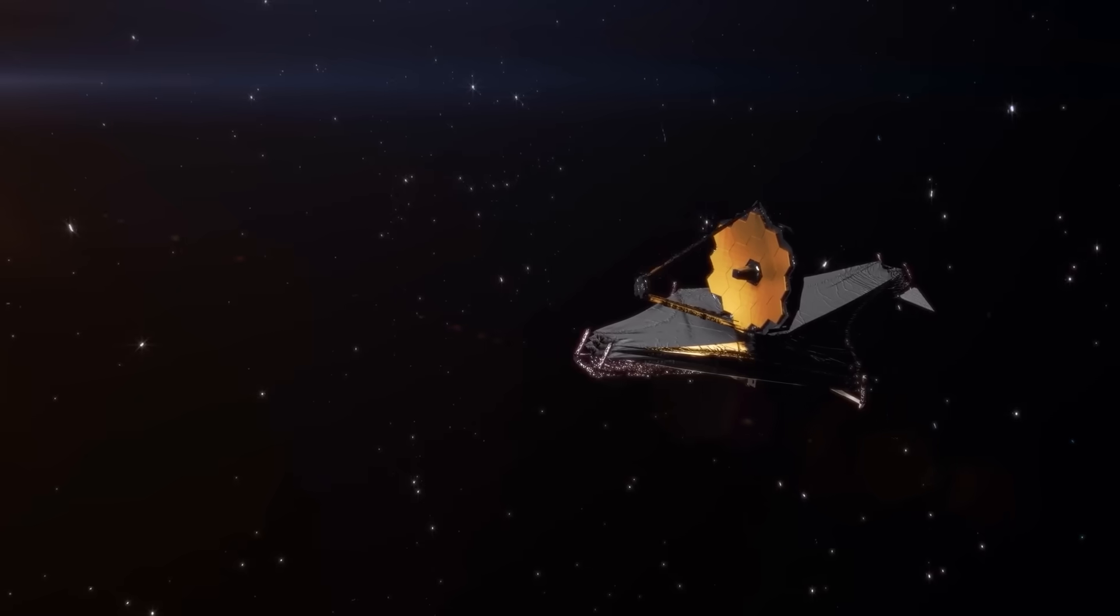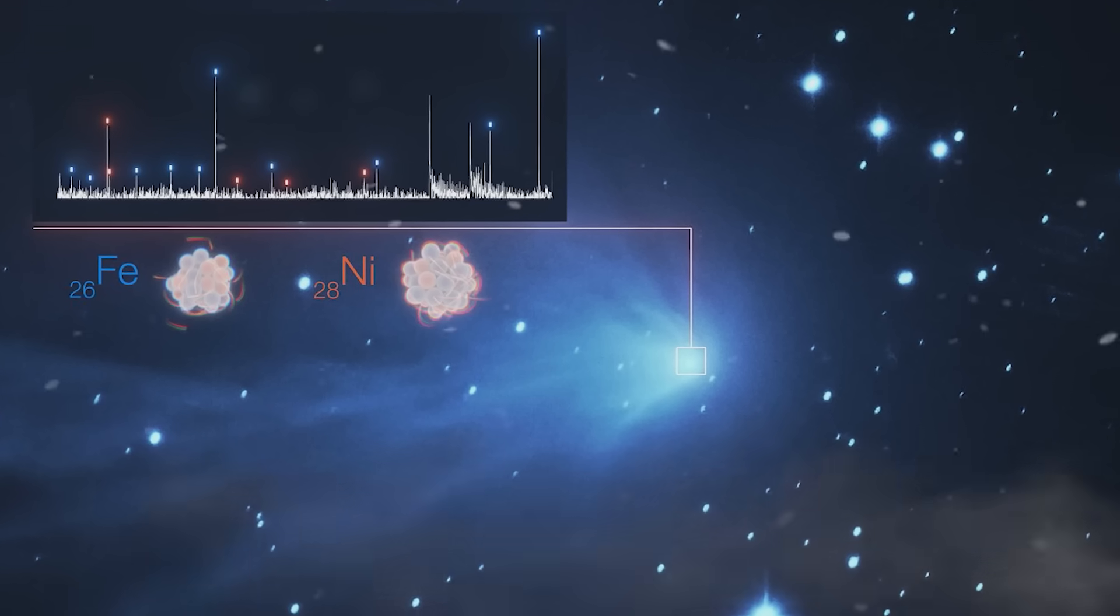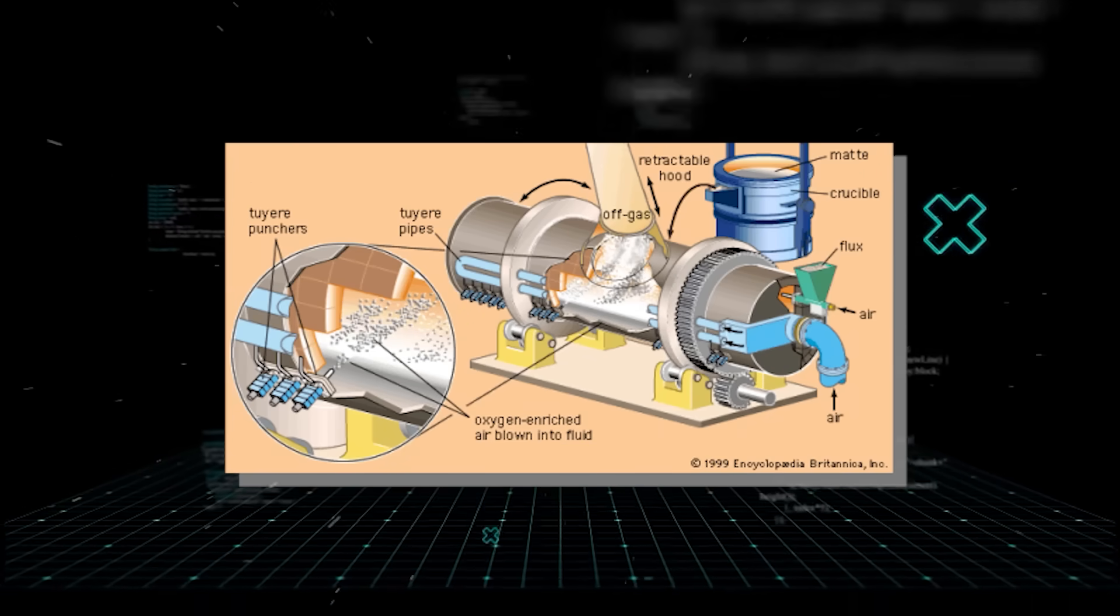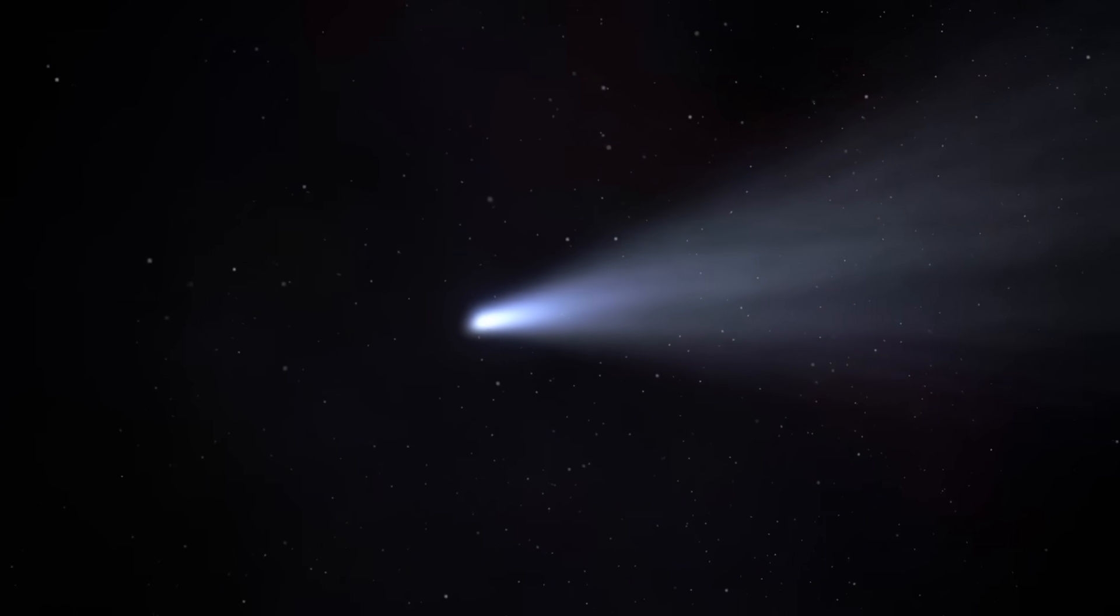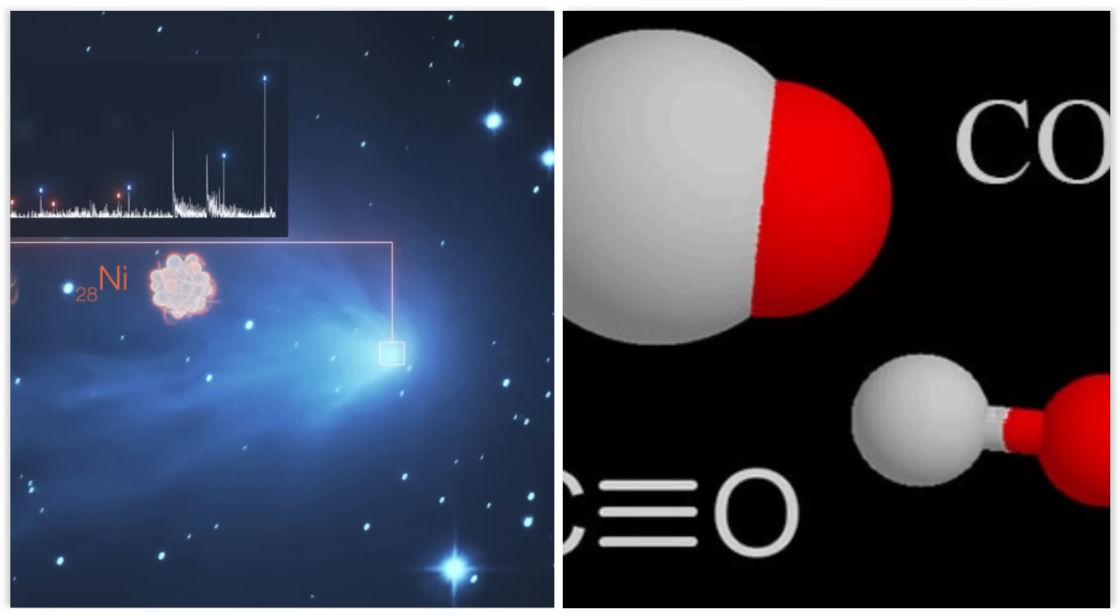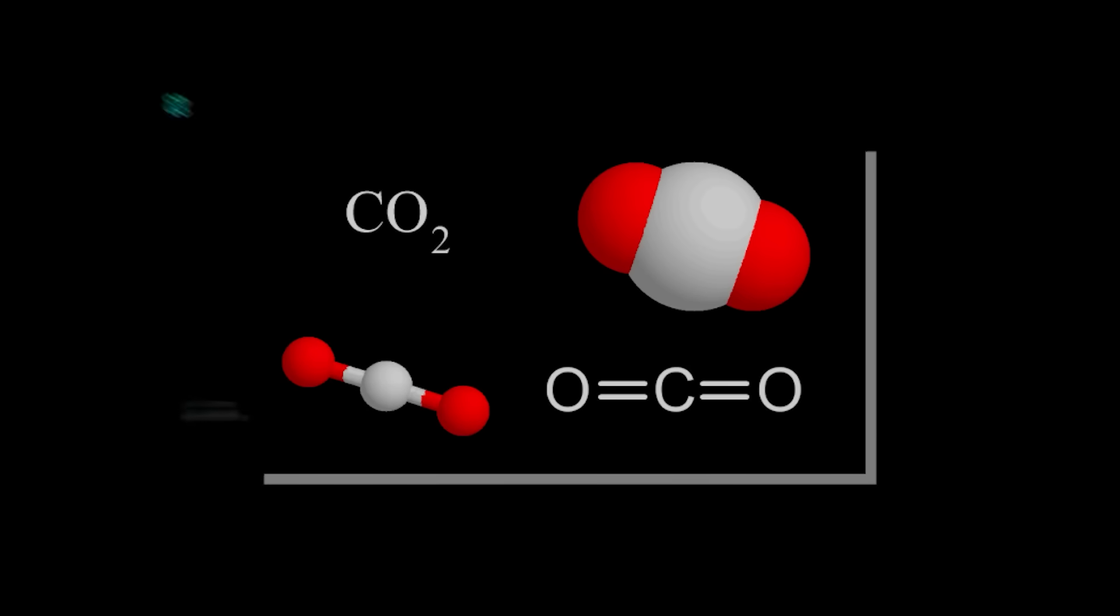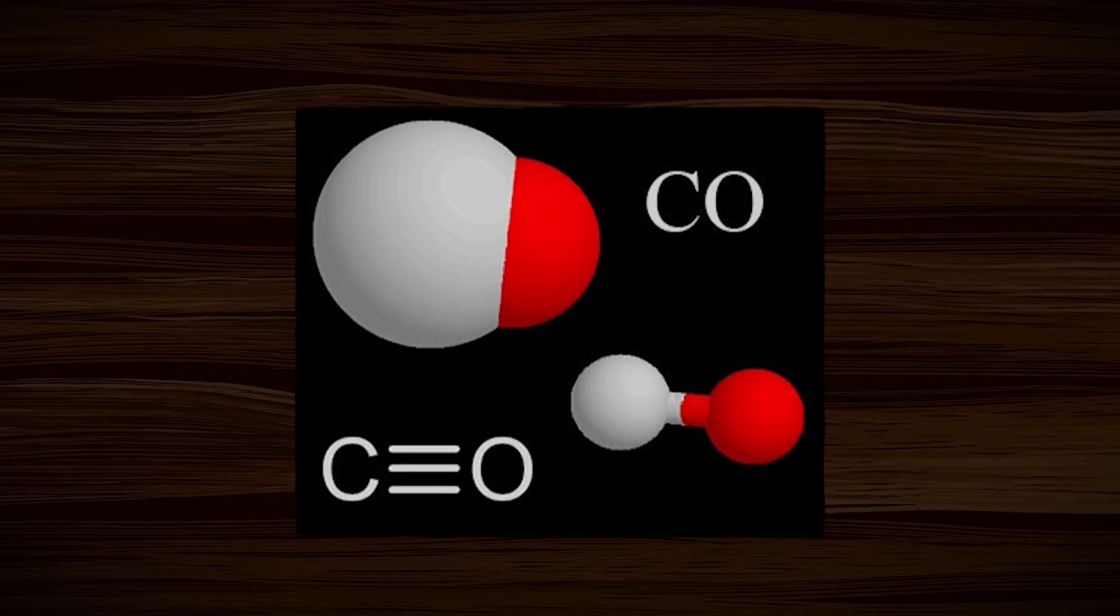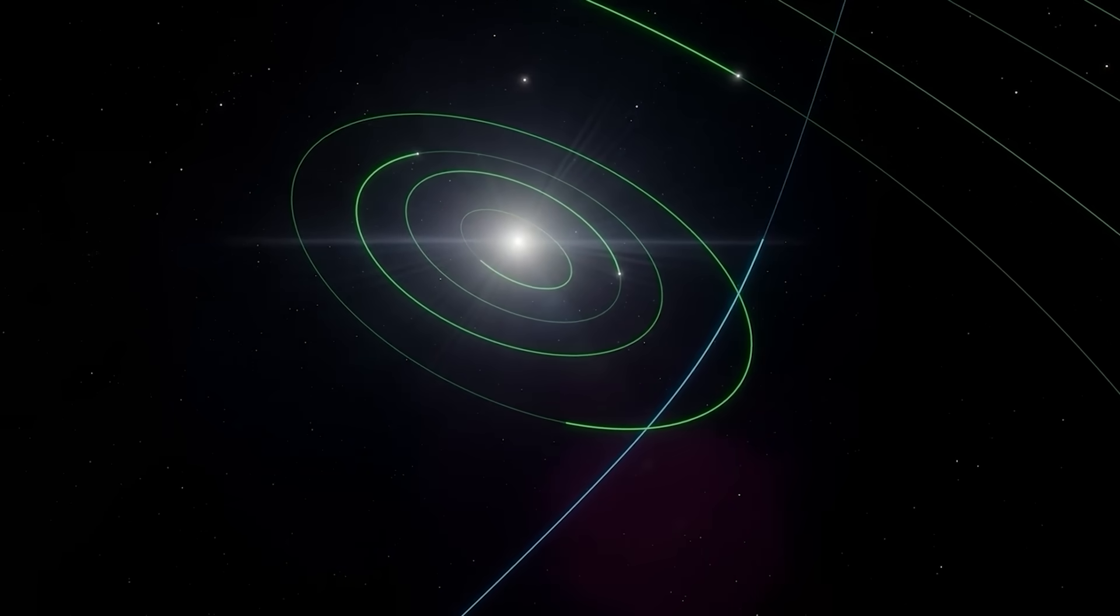This is where the James Webb data becomes so crucial. The discovery of atomic nickel without iron is the smoking gun for many researchers. The process to separate nickel from iron is an industrial one. We do it here on Earth. One common method is the Mond process, which uses carbon monoxide to separate and purify nickel. And what else did Webb detect in the plume besides the overwhelming amount of carbon dioxide? A familiar ratio of carbon monoxide. The pieces start to fit together in a very disturbing way.